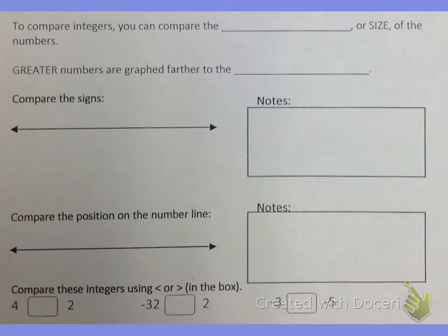To compare integers you can compare the absolute value or the size of the numbers. Greater numbers are graphed farther to the right. So we could compare the signs of two integers.